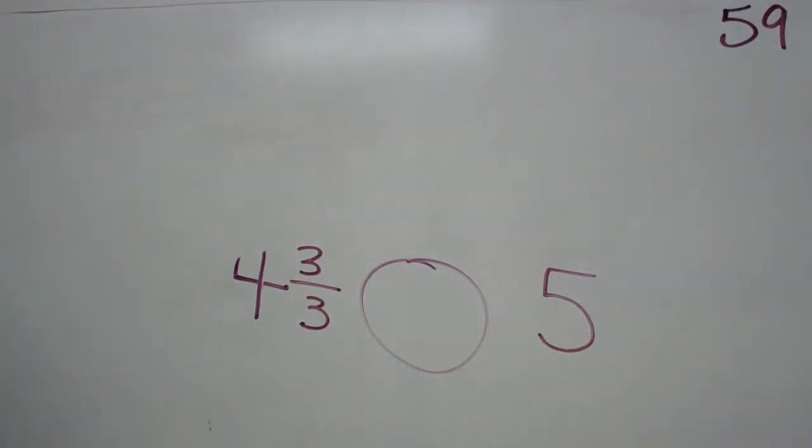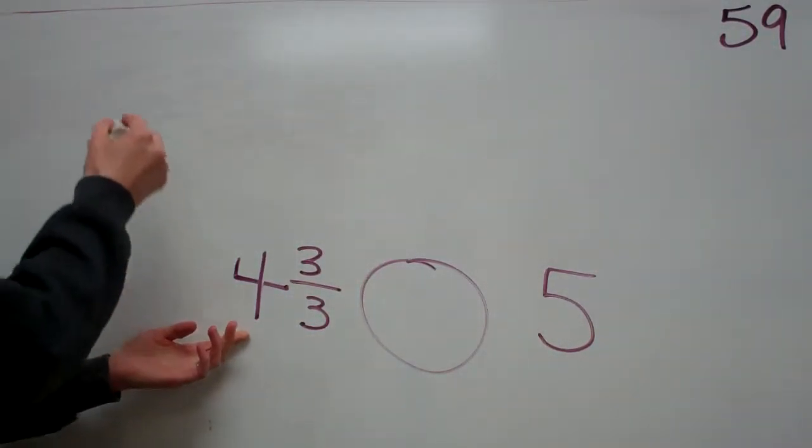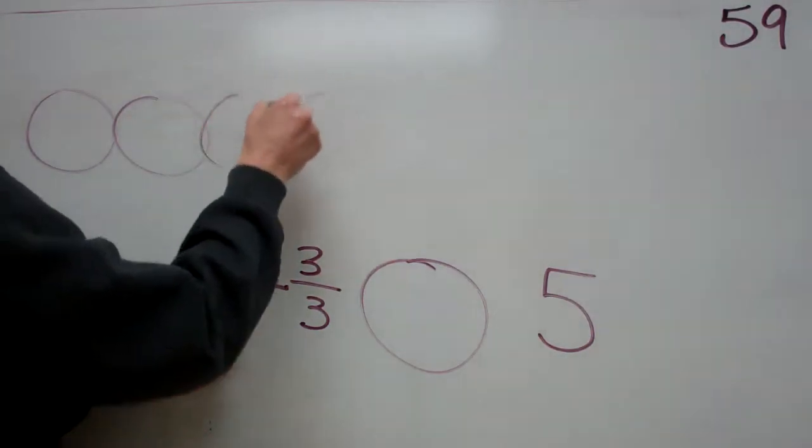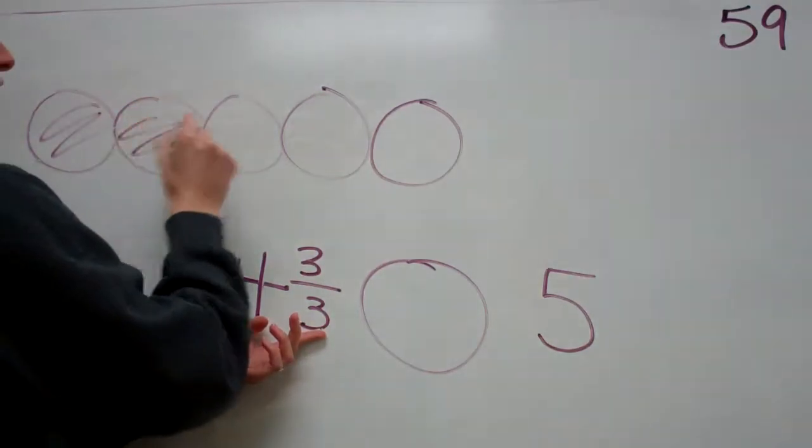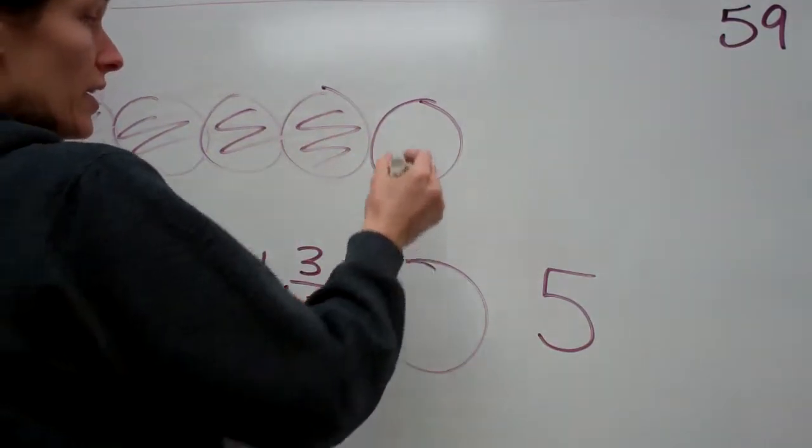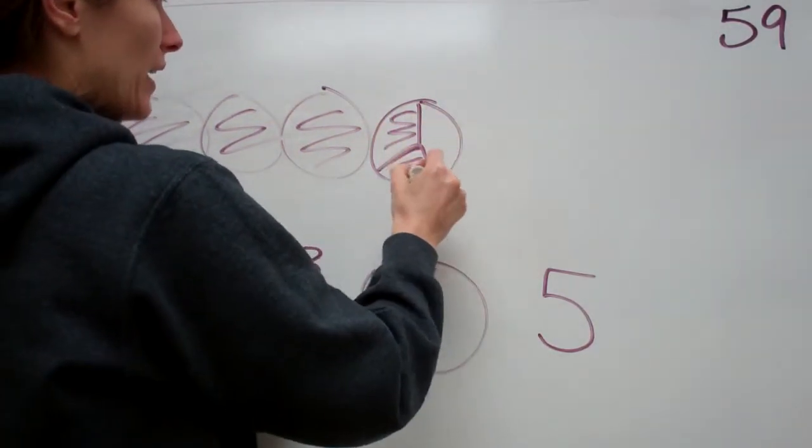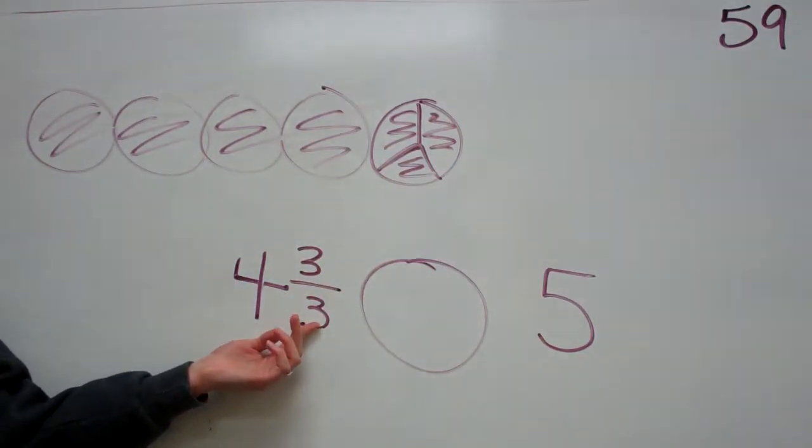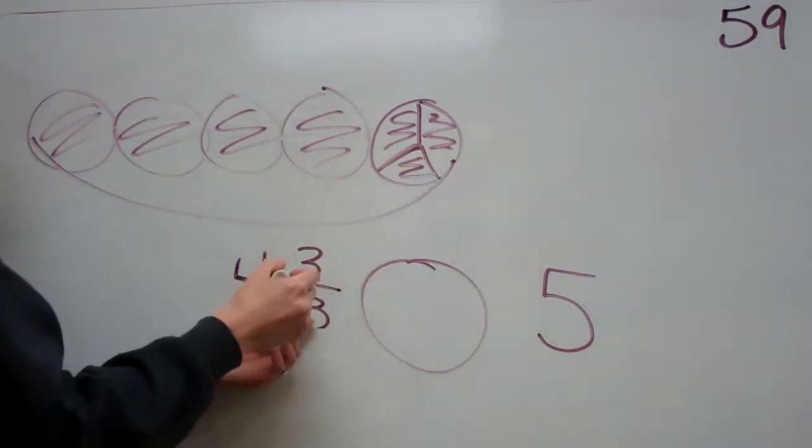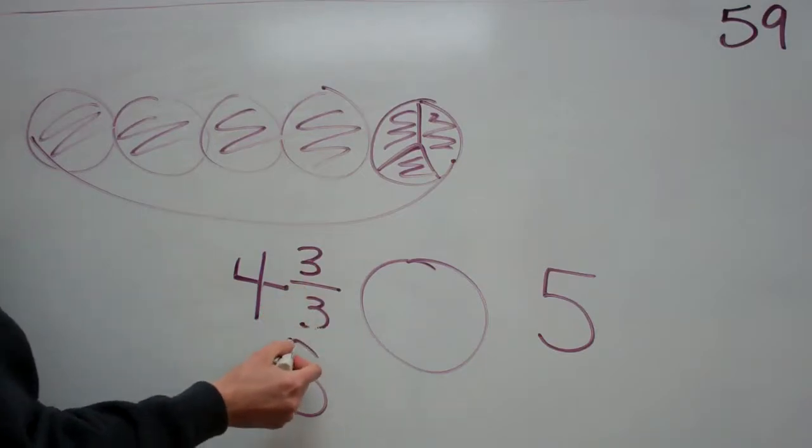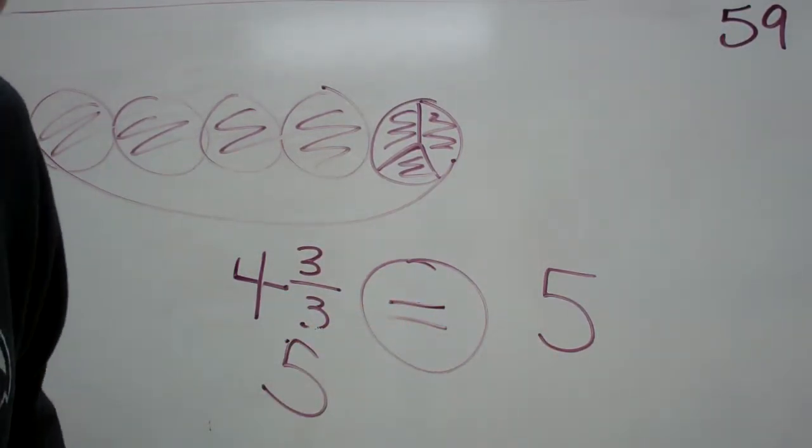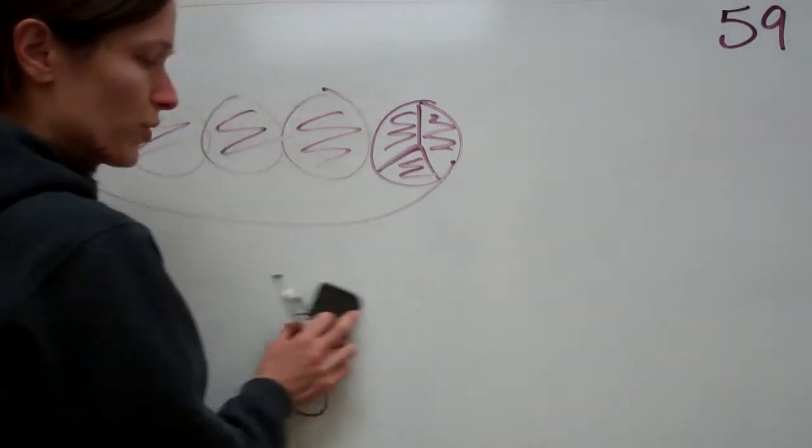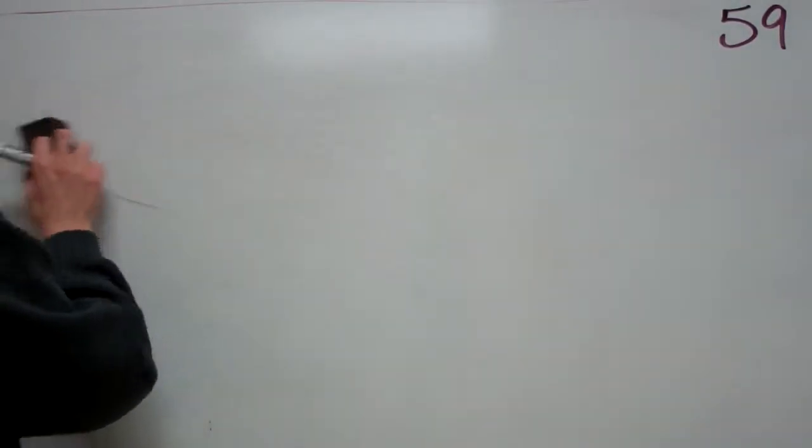How come? Because three over three is one whole. Yes, so this would be like I have one, two, three, four whole pies, plus this other one, and all of these four pies are filled in, and then I have three of the three filled in. So how many do I have total? Five. So if I said five whole is equal. Very good.